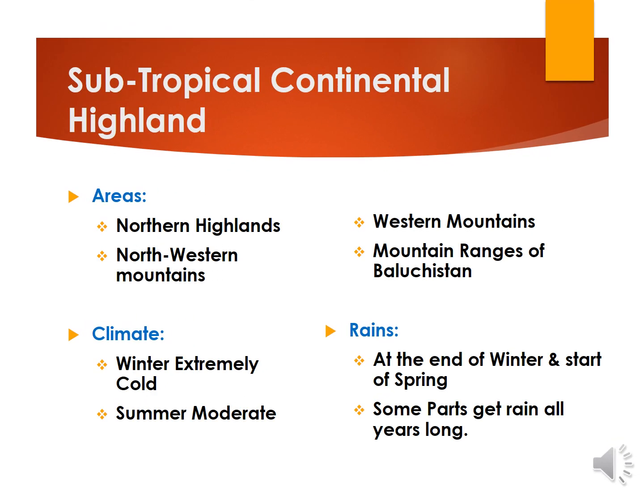My dear students, Northern Highlands, Northwestern Mountains, Western Mountains, and Mountain Ranges of Balochistan are included in the Subtropical Continental Highland. The climate of this region is that winters remain extremely cold and summers are moderate. This region receives rainfall at the end of winter and at the start of spring. Some parts of this region, for example Murree, have rugged rainfall all year long.